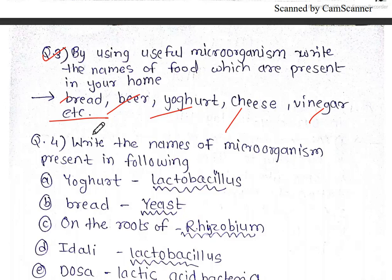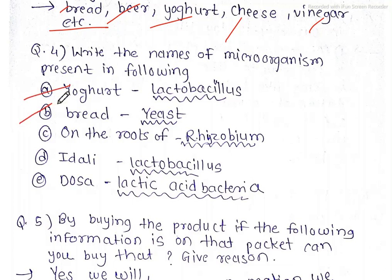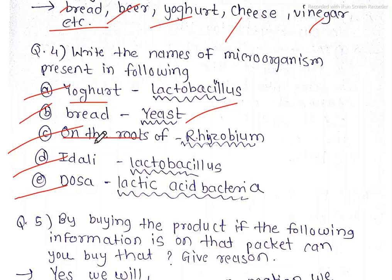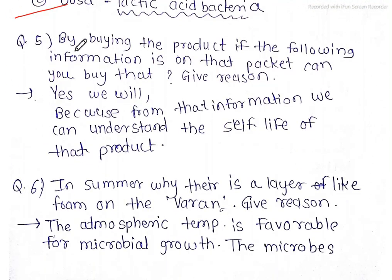Write the names of microorganisms present in the following — a, b, c, d, and e. Which microorganism is used in yogurt? Lactobacillus. Bread? Yeast. On the roots of legumes, it is called Rhizobium. Idli is again Lactobacillus — lactic acid bacteria.